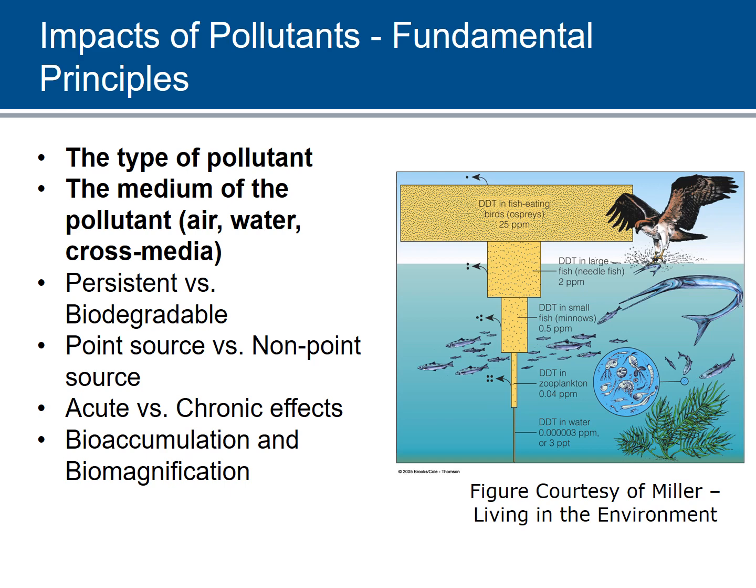Some of the fundamental principles. The type of pollutant is really critical. Different pollutants — nutrients, for example — are going to stimulate the growth of algae, which leads to over-productivity and ultimately can lead to a dip in oxygen level. Other materials are directly toxic to organisms, but might not be toxic at their concentration in the water. But as you get higher up the food chain, they get more and more concentrated. The medium of the pollutant is also critical.